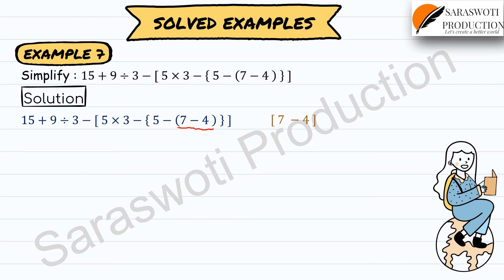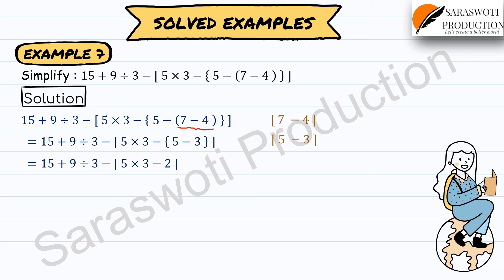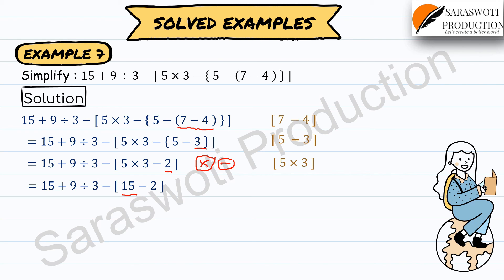Next, simplify the curly bracket: 5 minus 3 equals 2, giving 15 plus 9 ÷ 3 minus [5 × 3 minus 2]. Inside the square bracket, apply BODMAS — multiplication before subtraction: 5 × 3 equals 15, then 15 minus 2 equals 13, giving 15 plus 9 ÷ 3 minus 13.